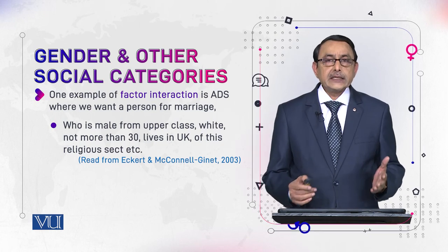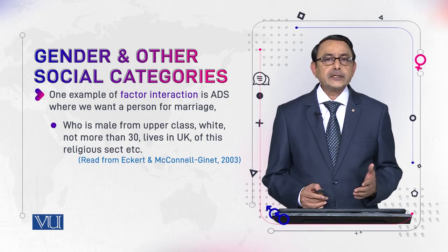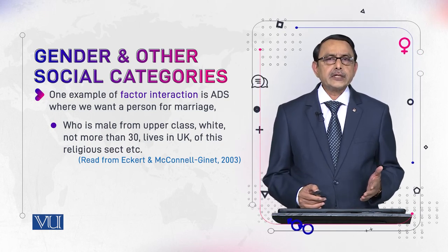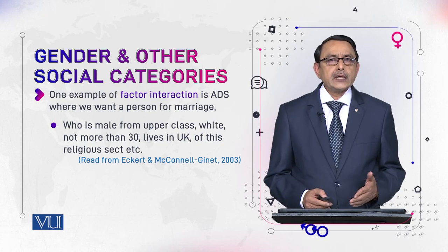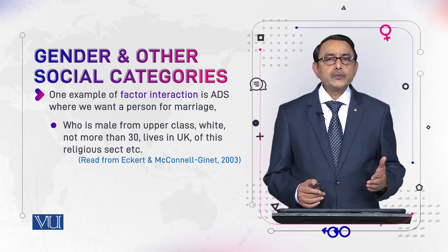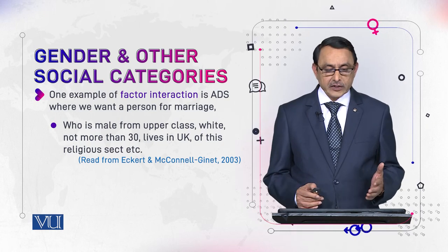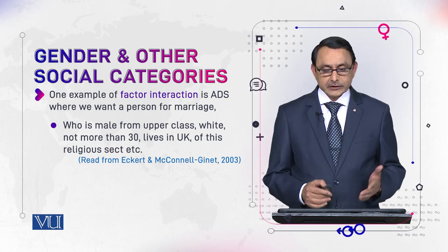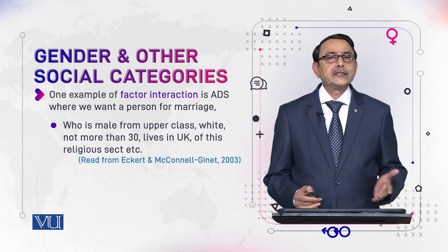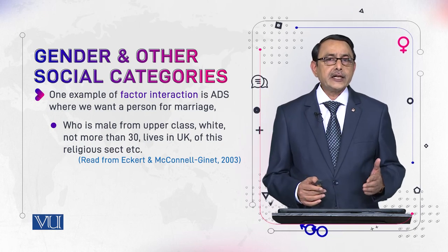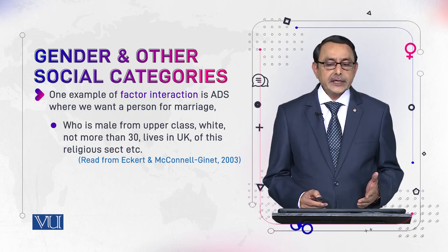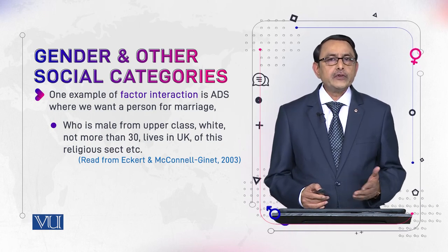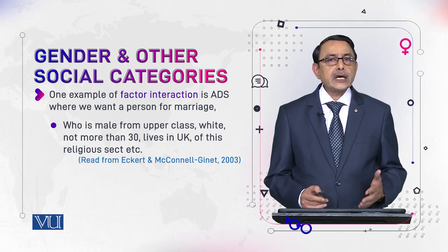In such ads we find that if a person is to be a husband, they should be from the upper class, white, not more than 30, lives in the UK, of a specific religious sect, etc. This single ad can clarify the idea that a number of factors are involved in defining who we are and what our identity is, besides gender.